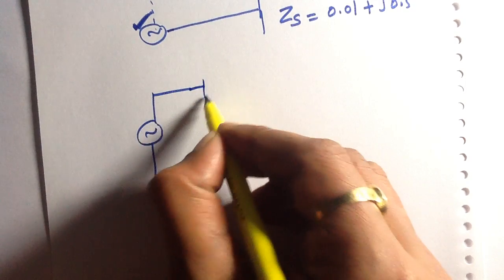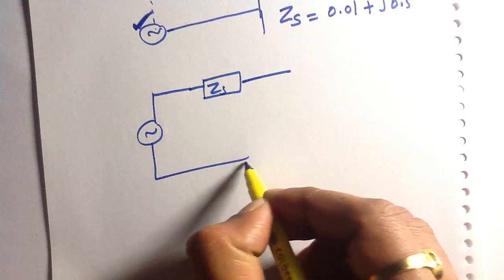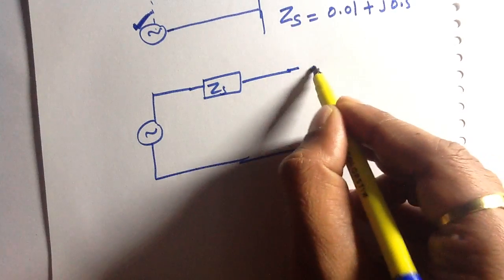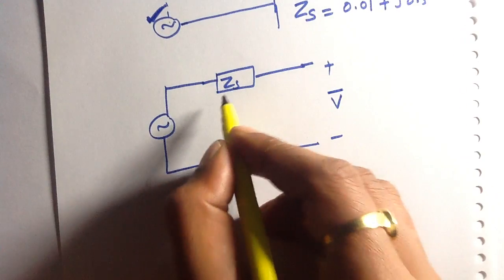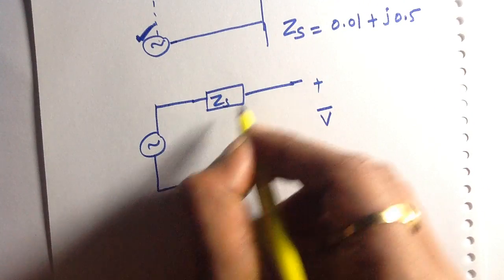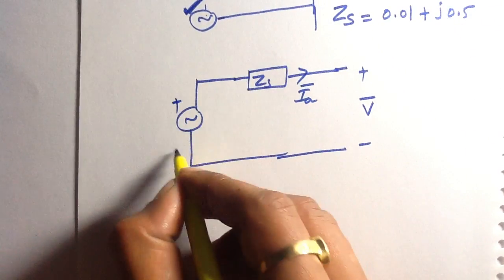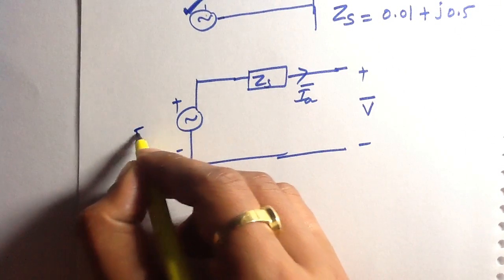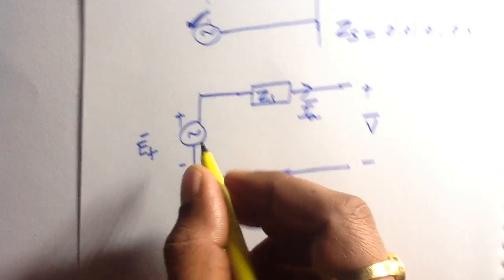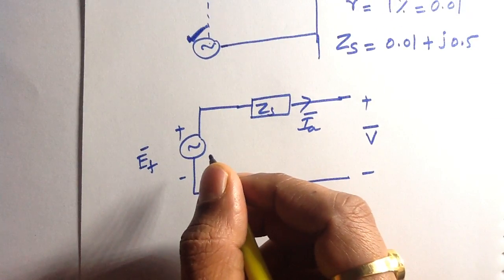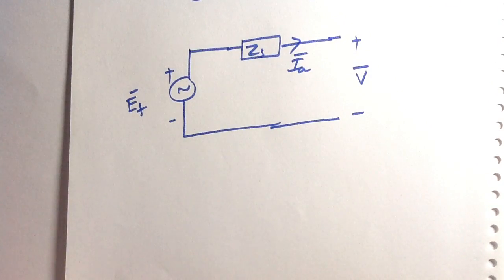Let us draw the complete circuit diagram of this alternator. It has a terminal voltage V, a synchronous impedance Z_S, an armature current I_A flowing through it, and an internal EMF E_F of the generator. Now let us identify the values given in the problem.